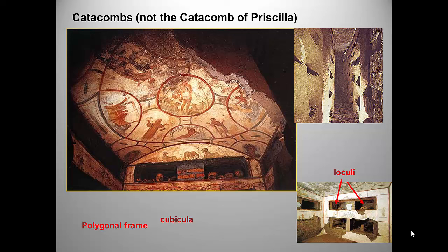You saw these terms in the Khan Academy video, I hope. Polygonal frame is a term now used in computer graphic design, and it means just what it sounds like: a geometric shape drawn around a painting or design — in this case, an oval that contains a spoked wheel pattern of paintings. An orant is a figure with both arms raised in prayer. A lunette refers to a semicircular space, often above a door or window, and often decorated with fresco paintings or mosaics.